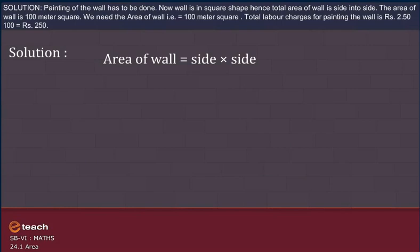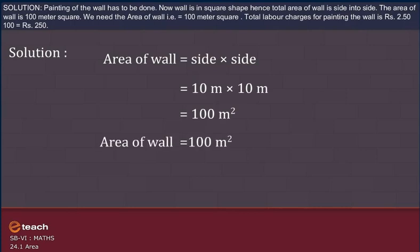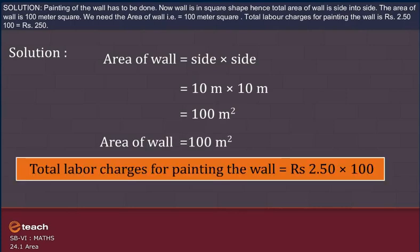Solution: Painting of the wall has to be done. Now, wall is in square shape. Hence, total area of the wall is side × side. The area of wall is 100 meter square. We need the area of wall that is equal to 100 meter square. Total labor charges for painting the wall is rupees 2.50 × 100 is equal to rupees 250.